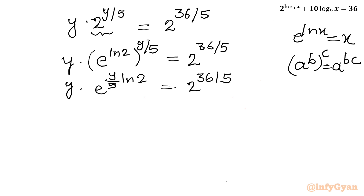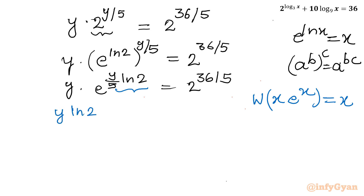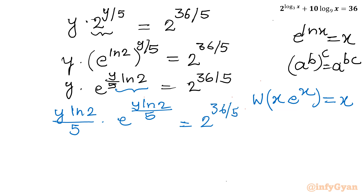Now I will use the Lambert W function property: W(x·e^x) = x. To get the equation into that form, I multiply both sides by ln2/5. This gives y·(ln2/5)·e^(y·ln2/5) equal to 2^(36/5) times (ln2/5).